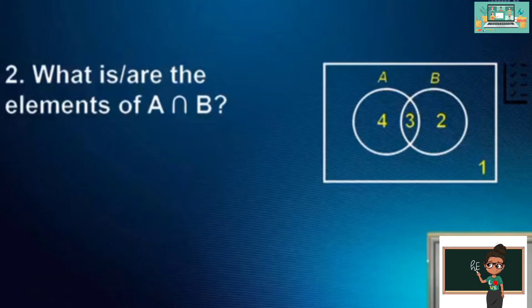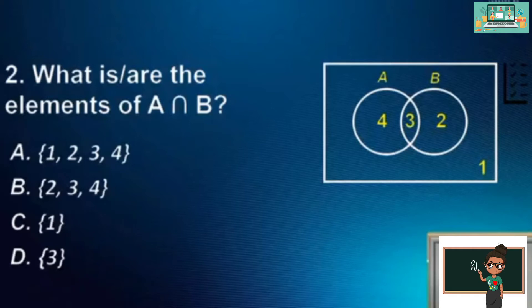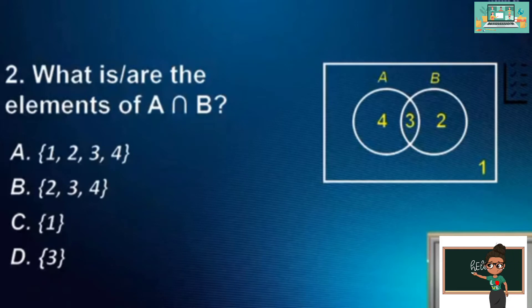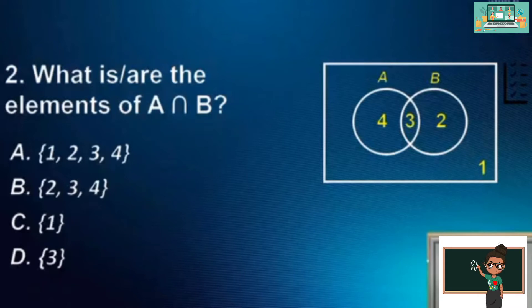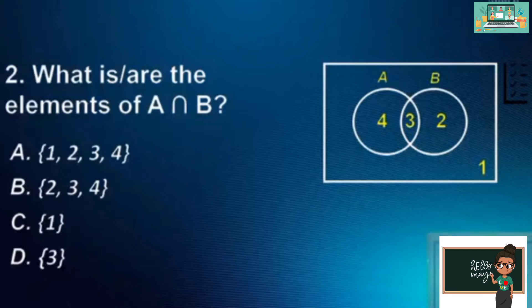Number 2. What is or are the elements of A intersection D? A. {1, 2, 3, 4}. B. {2, 3, 4}. C. {1}. D. {3}. The answer is D.